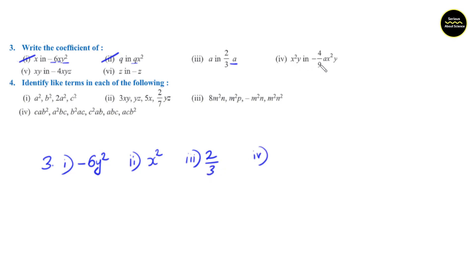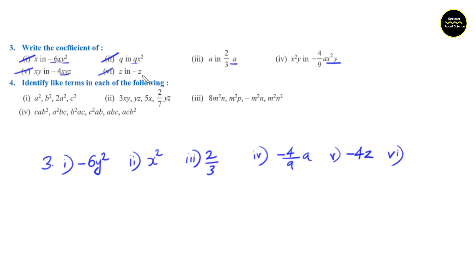Fourth question: x square y in minus 4 by 9 ax square y. We have to exclude x square y, and the remaining part is minus 4 by 9 a. That will be the answer: minus 4 by 9 a. Fifth question: xy in minus 4xyz. Exclude xy and what is remaining? Minus 4 and z. The answer is minus 4z. Question number 6: z in minus z. Minus z can be written as minus 1 times z. So the coefficient is minus 1. The answer is minus 1.